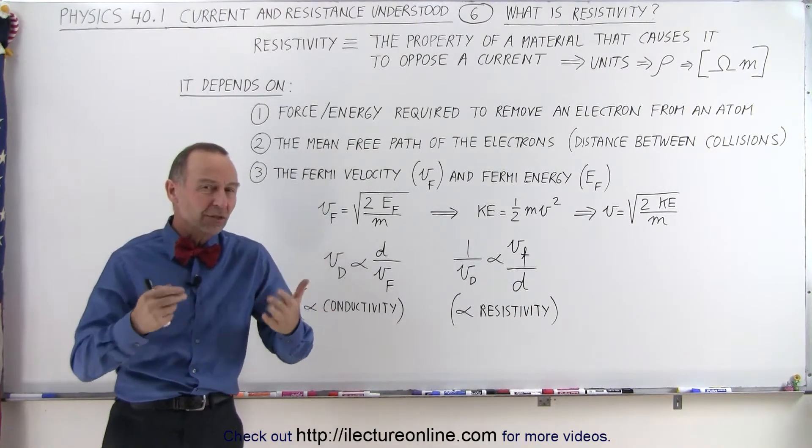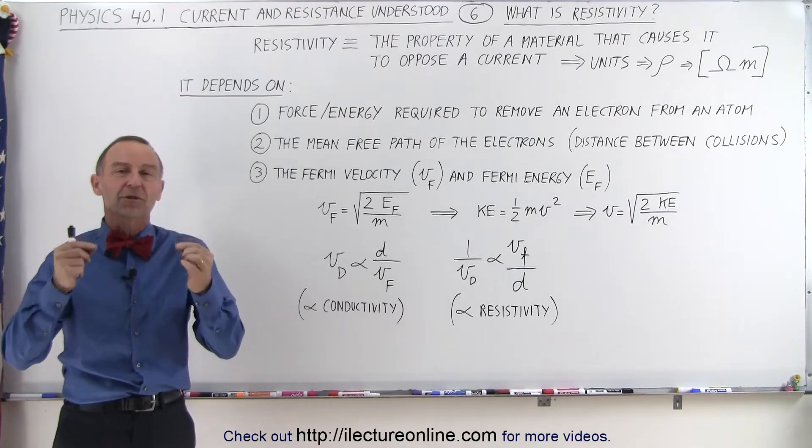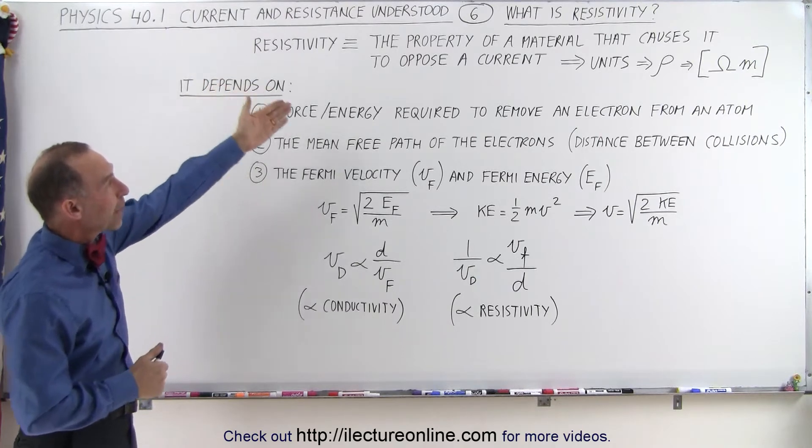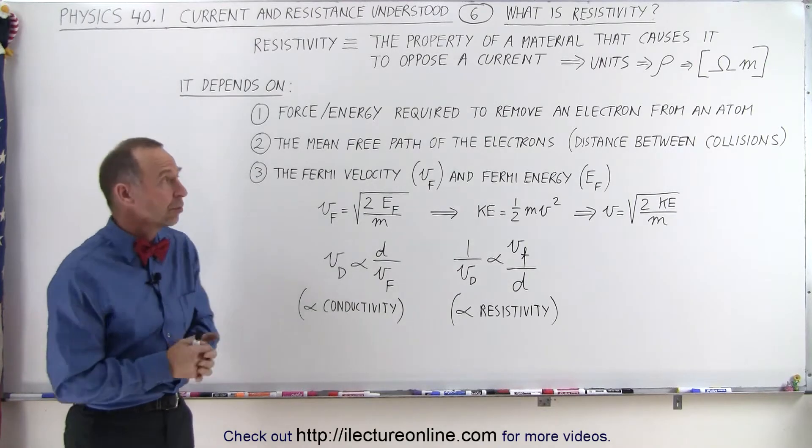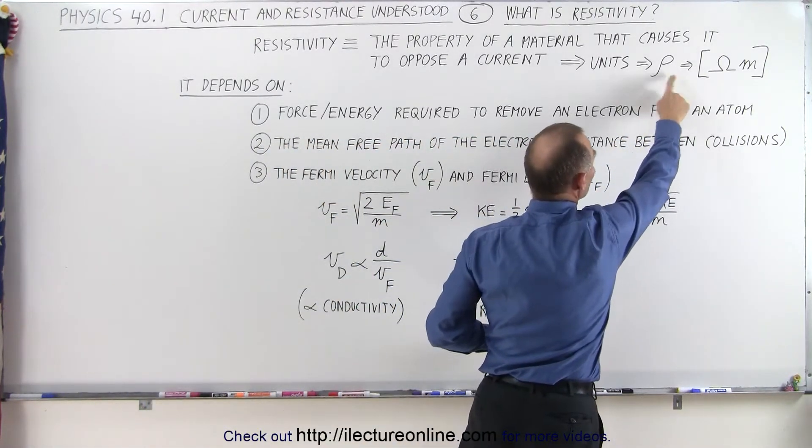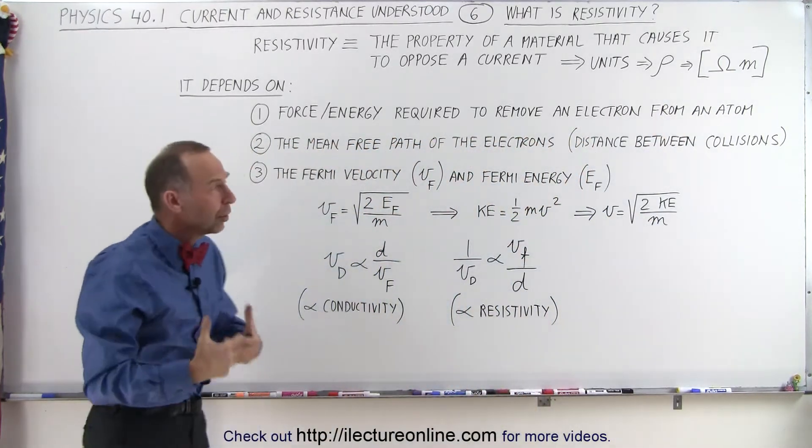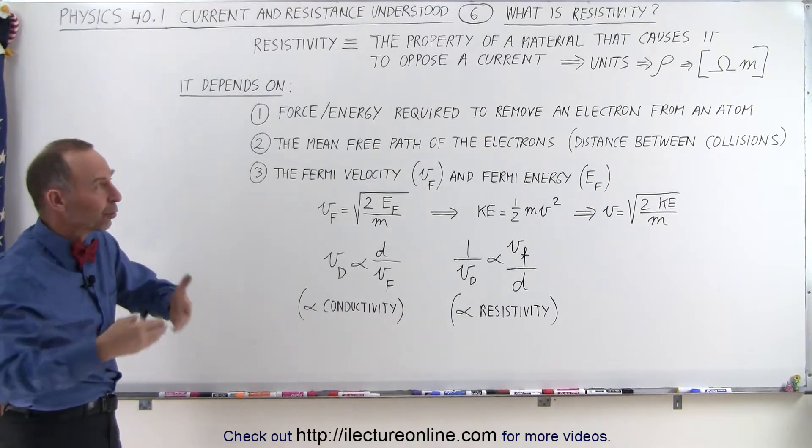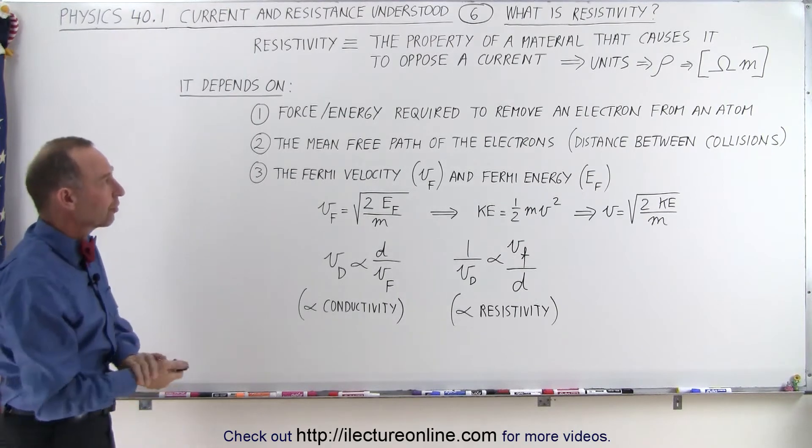But where does that resistance come from? Well, it's related to the resistivity of the materials in the circuit. In other words, resistivity is the property of a material that causes it to oppose a current, the flow of charges. We use the symbol rho for resistivity, and the unit for that is ohms times meters. Later on we'll see how to find the resistance of an object once the resistivity is known and the geometry or structure of the object is known.